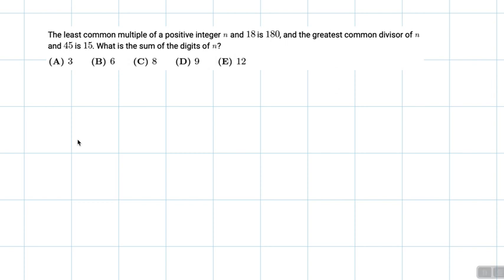The least common multiple of a positive integer n and 18 is 180 and the greatest common divisor of n and 45 is 15. What is the sum of the digits of n?